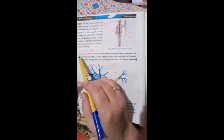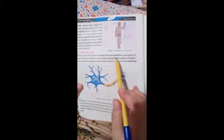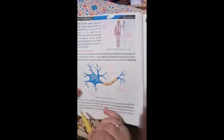Under the heading of neuron, you have to write from this: neuron or nerve cell is the basic structural and functional unit of nervous system. Up to this.